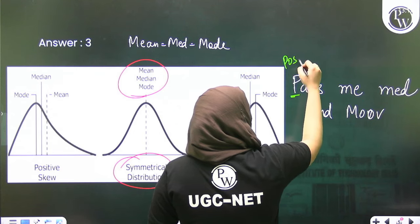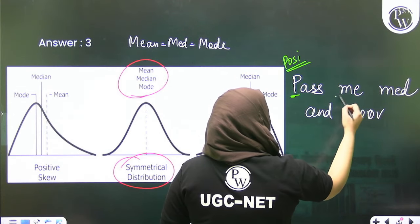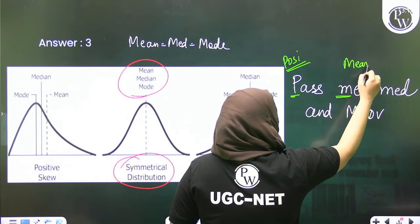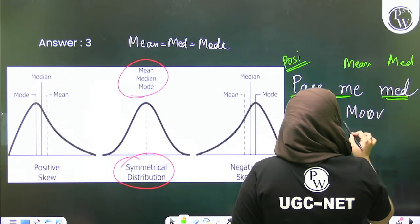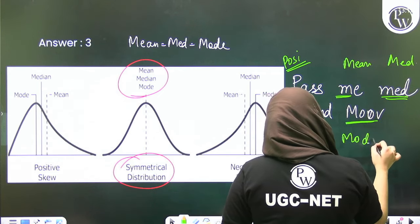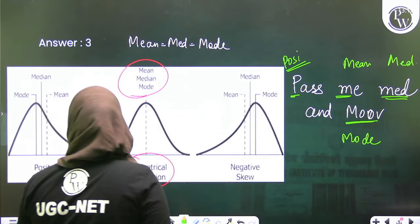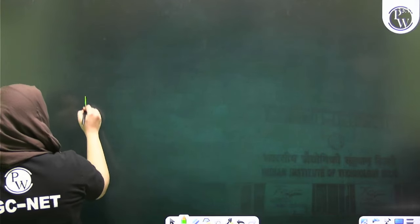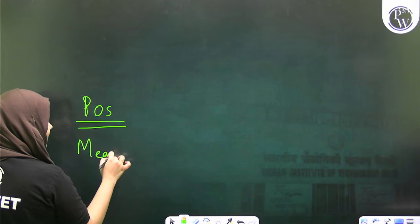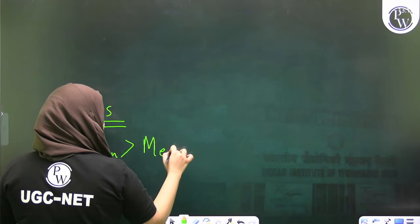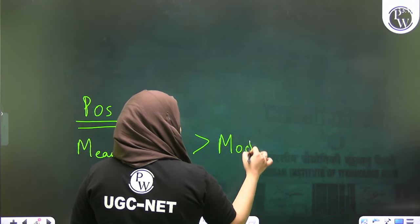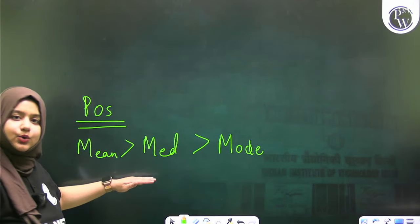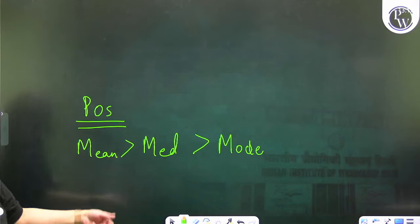For positive skewness, remember this trick: "Pass me Med and Move" - Pass for Positive, Me for Mean, Med for Median, Move for Mode. This shows you the order for positive skewness.